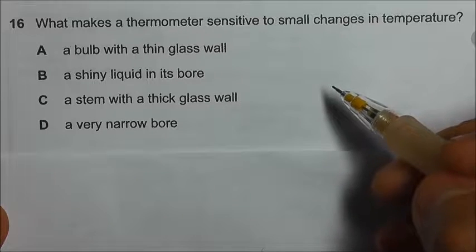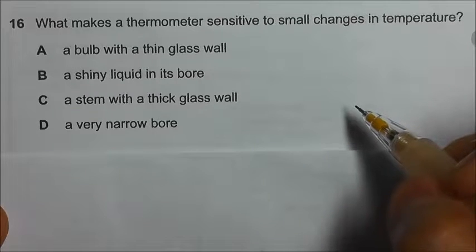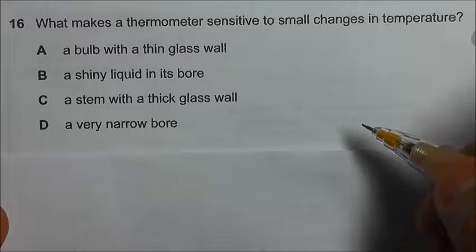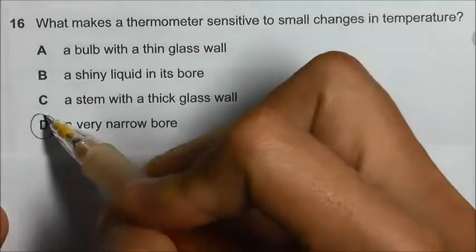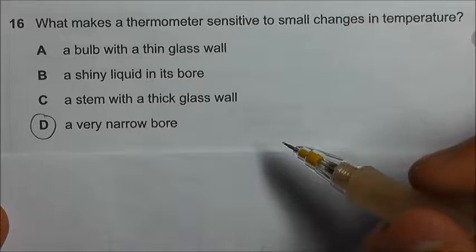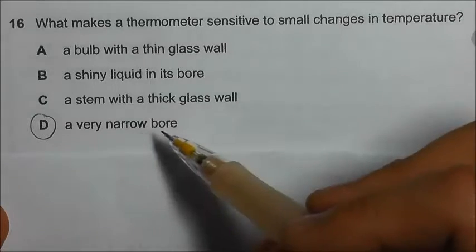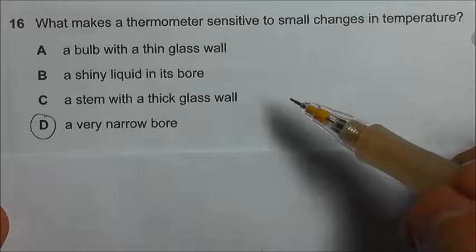This means that when there is a small change in temperature, there must be a significant change in the mercury column so we can notice a change very easily. So what we can do is to have a very narrow bore. So when the mercury expands, the volume will increase. So if the bore is very narrow, the increase in the mercury column will be very obvious.